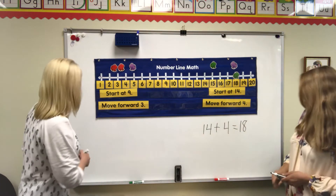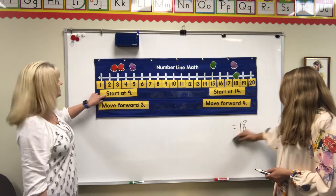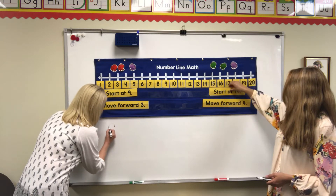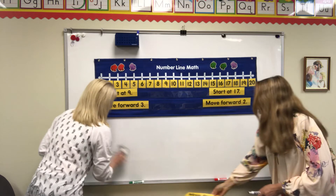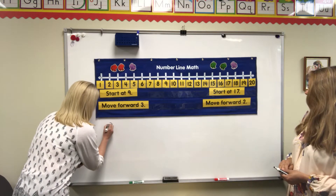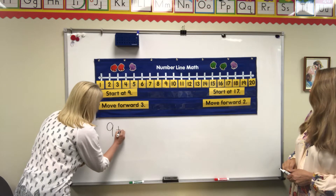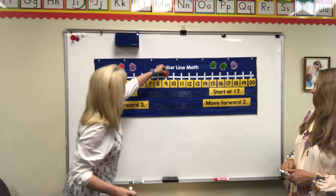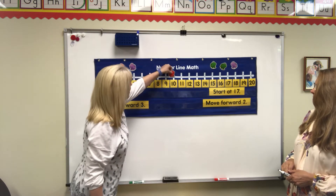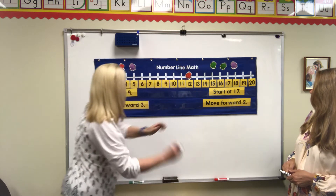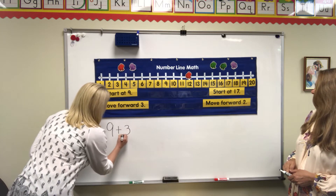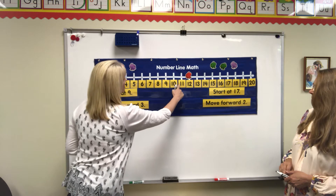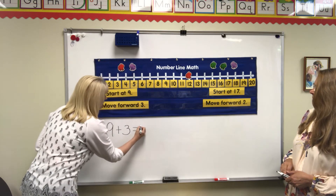My next one says start at 9, so we're going to start with number 9. My pen is giving me trouble today, sorry. There's my 9, and we're going to add — move forward 3. So I'm going to start my frog on 9 and move forward 3: 1, 2, 3. That is telling me 9 plus 3, starting at 9 with 3 spaces forward, equals 12.